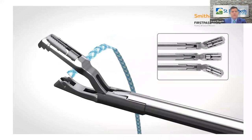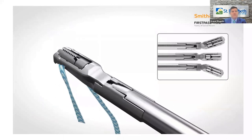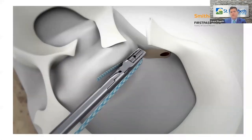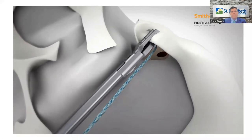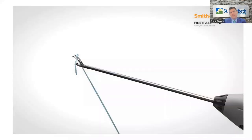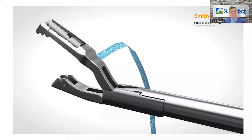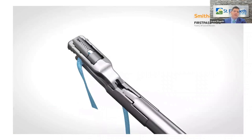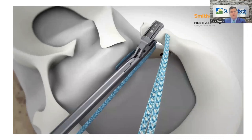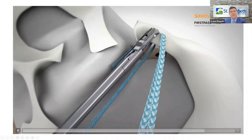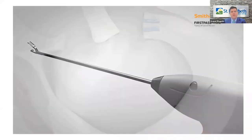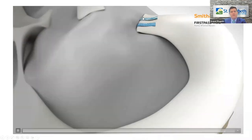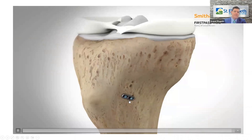The lateral meniscal root repair technique is very similar to the medial. This shows our capturing device, the mini first pass. When we clamp this down, it pierces through and captures on top, allowing us to pull it back. I then take these and convert them into luggage tag sutures. Simple sutures are doubled back on themselves just like a luggage tag — this has been shown to be stronger, essentially doubling the suture back on itself. These come down the front and we can tie them right over a button. Very minimally invasive: three portals on the front of the knee and one small incision on the tibia.